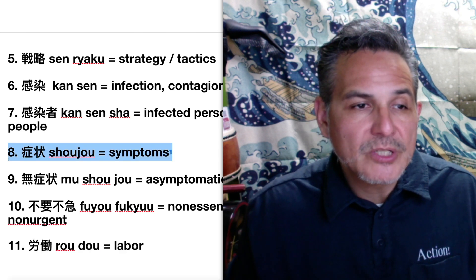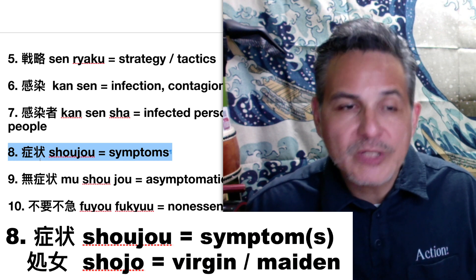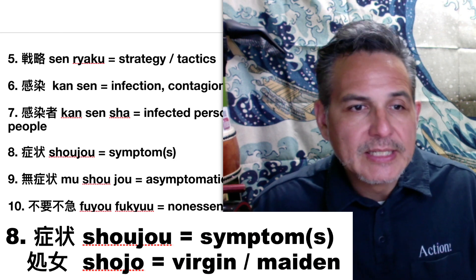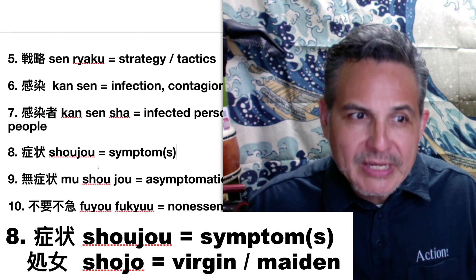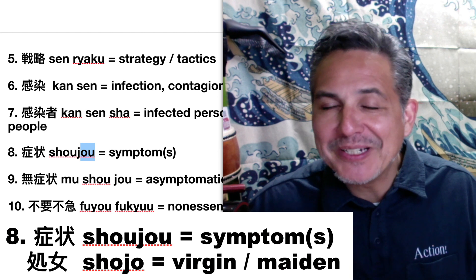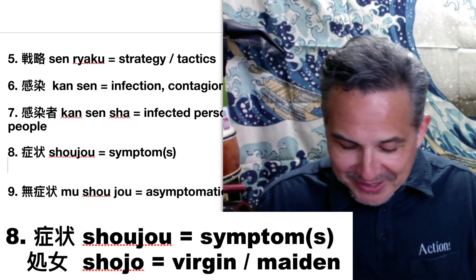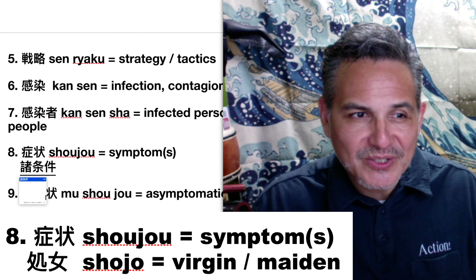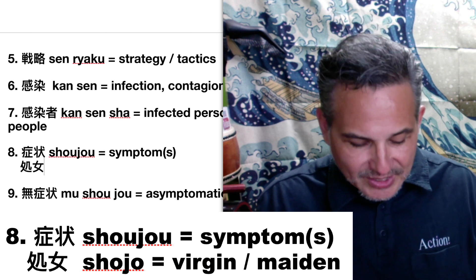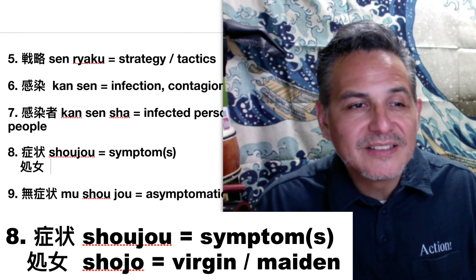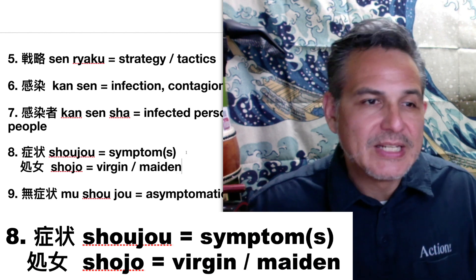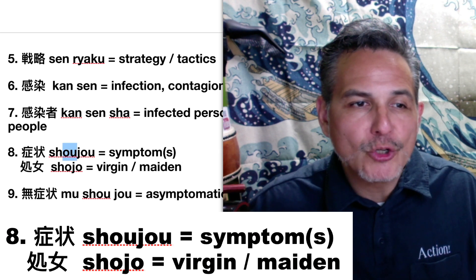Another very useful word — not just for coronavirus but anytime you are sick — is shoujo, which means symptoms. Remember, plural doesn't really exist in Japanese. Be sure to stretch out the O: shoujo. If you make it too short it actually means virgin or maiden — only for young ladies — so be careful. Be sure to drag out the O: shoujo.